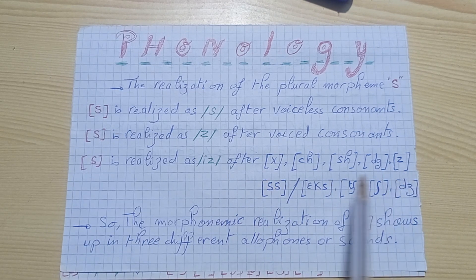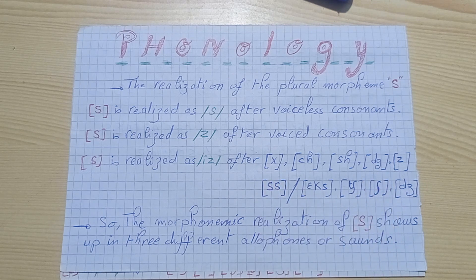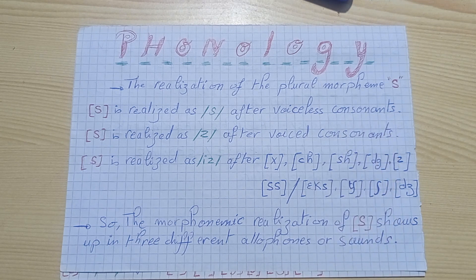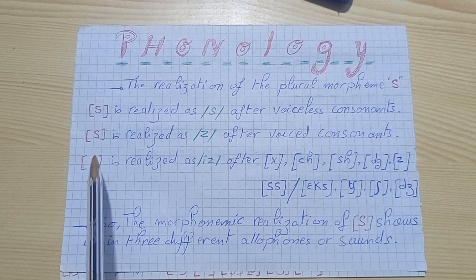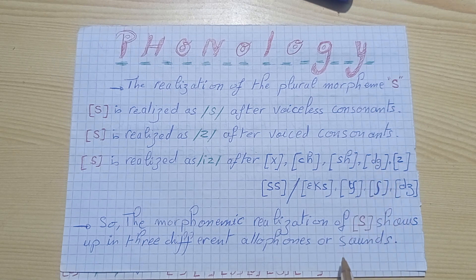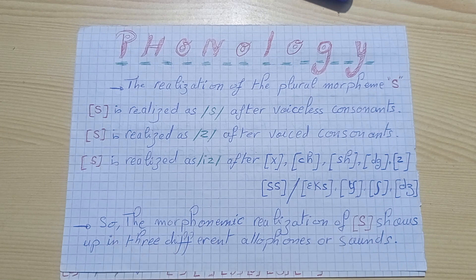Some of these sounds are voiced and some of them are voiceless. So we see that S is realized as /s/ after voiceless consonants, except some consonants like SH and S itself. And S is realized as /z/ after voiced consonants, except some consonants like J and Z. The morphophonemic realization of S shows up in three different allophones or sounds.